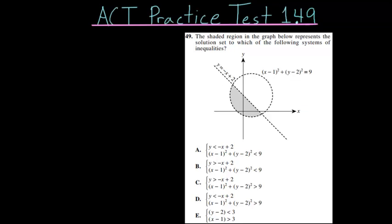For the 49th problem on this first ACT practice test, the shaded region in the graph below represents the solution set to which of the following systems of inequalities. So we're essentially given these two equations and their graphs, and what we have is this shaded region here that we have to analyze.